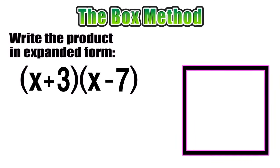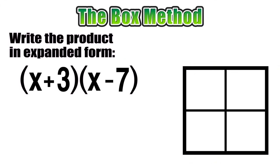To use the box method, the first thing you have to do is draw a box and split it into four equal size sections. We want to start by taking one of the binomials, in this case x plus 3, we usually take the first one and put it horizontally along the top of the box. Our second binomial we align vertically along the left side of the box.